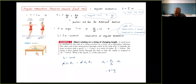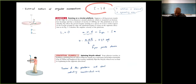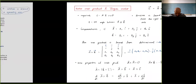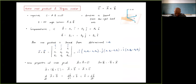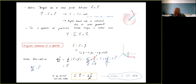If torque was zero, change in L was zero, then L was conserved and we could use this in solving certain problems. We also introduced the vector nature of angular momentum, and for a rotation around a symmetry axis, L vector equals moment of inertia times the omega angular velocity vector. We introduced cross product to make things more systematic, showing torque equals R cross F and angular momentum L equals R cross P.